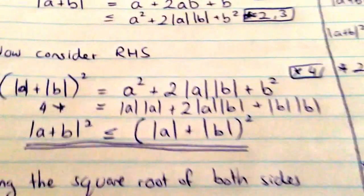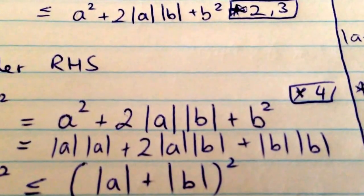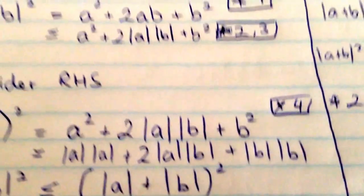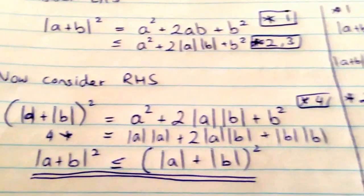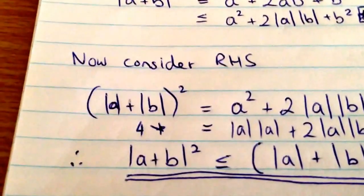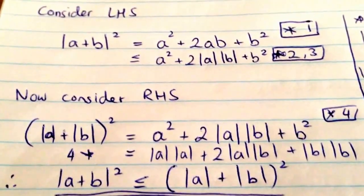So as a result, we notice that this expression, a squared plus 2 mod a mod b plus b squared, is less than or equal to the original expression we got. Because we've essentially shown that mod a plus b squared is less than or equal to that, the right-hand side of the equation, which we had all along.